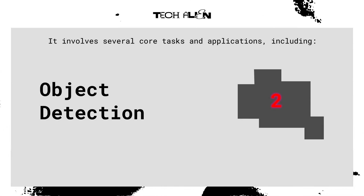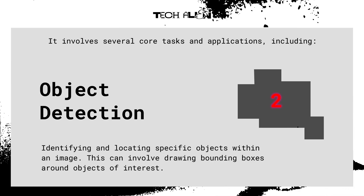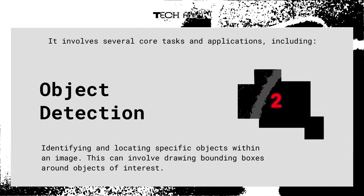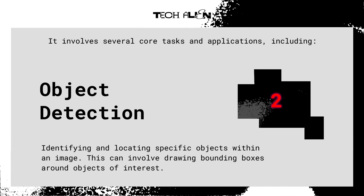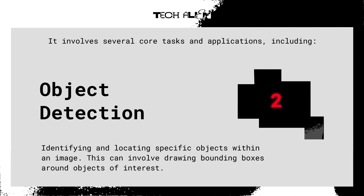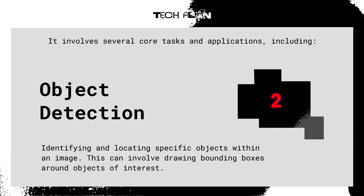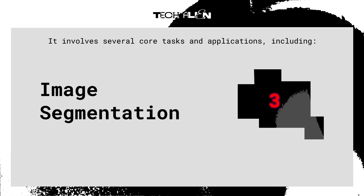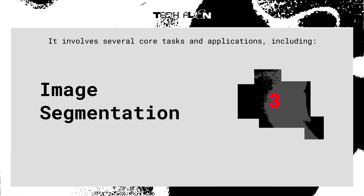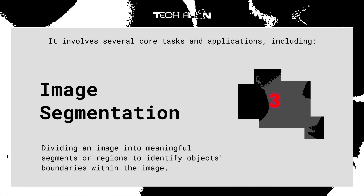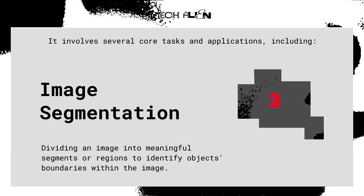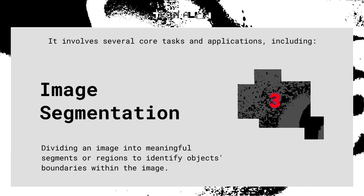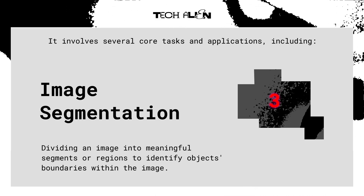Object detection involves identifying and locating specific objects within an image, which can include drawing bounding boxes around objects of interest. Image segmentation involves dividing an image into meaningful segments or regions to identify objects' boundaries within the image.